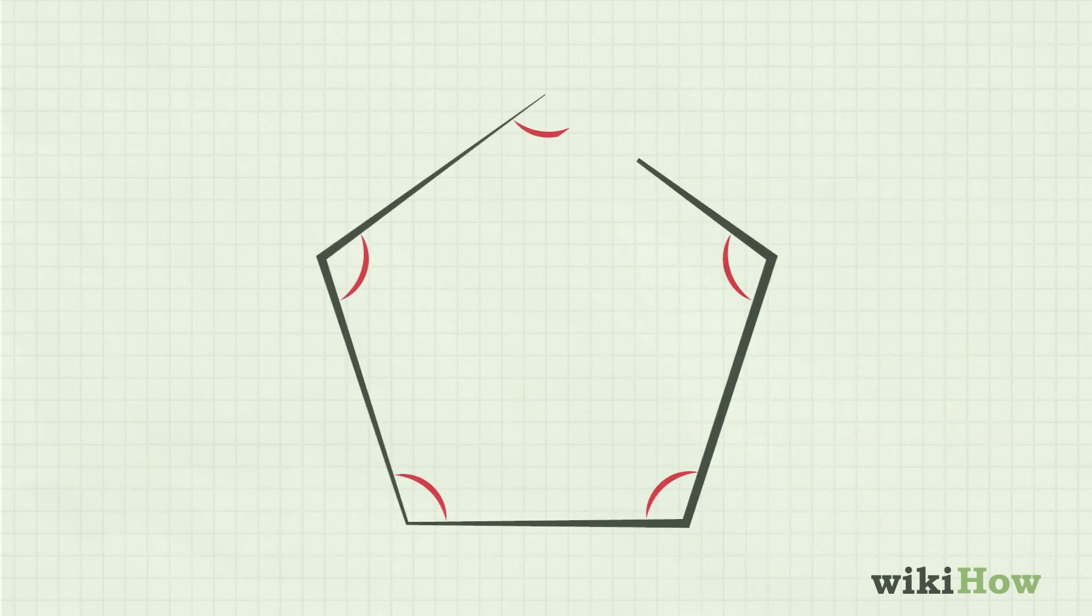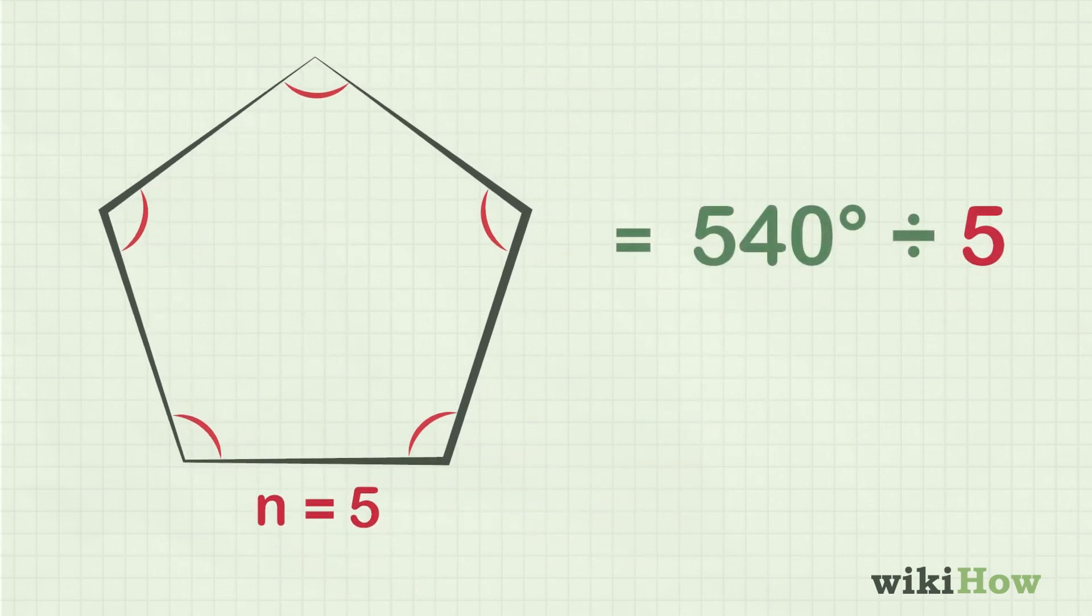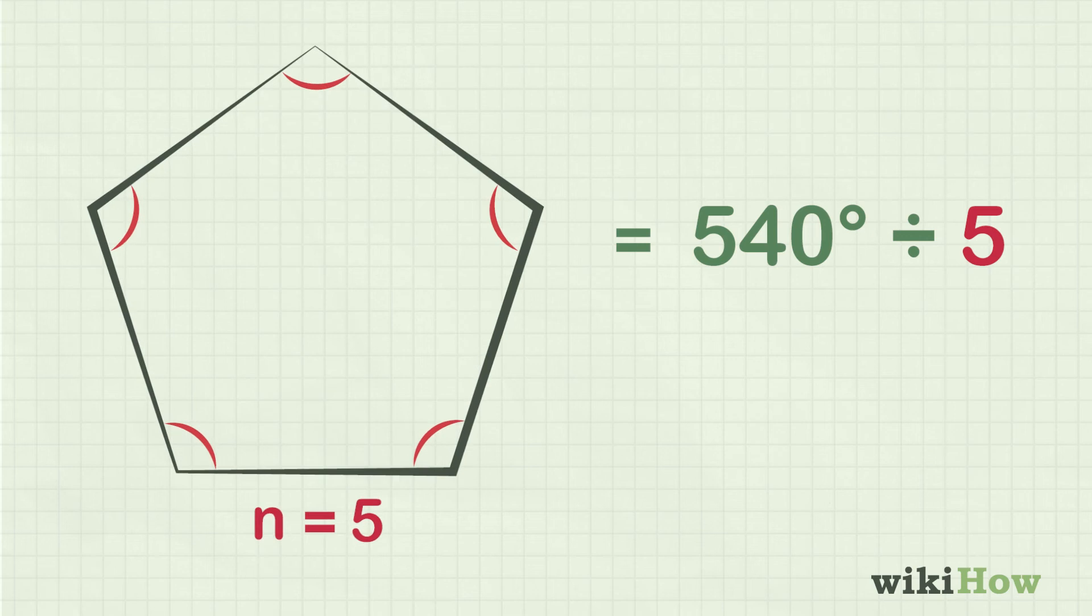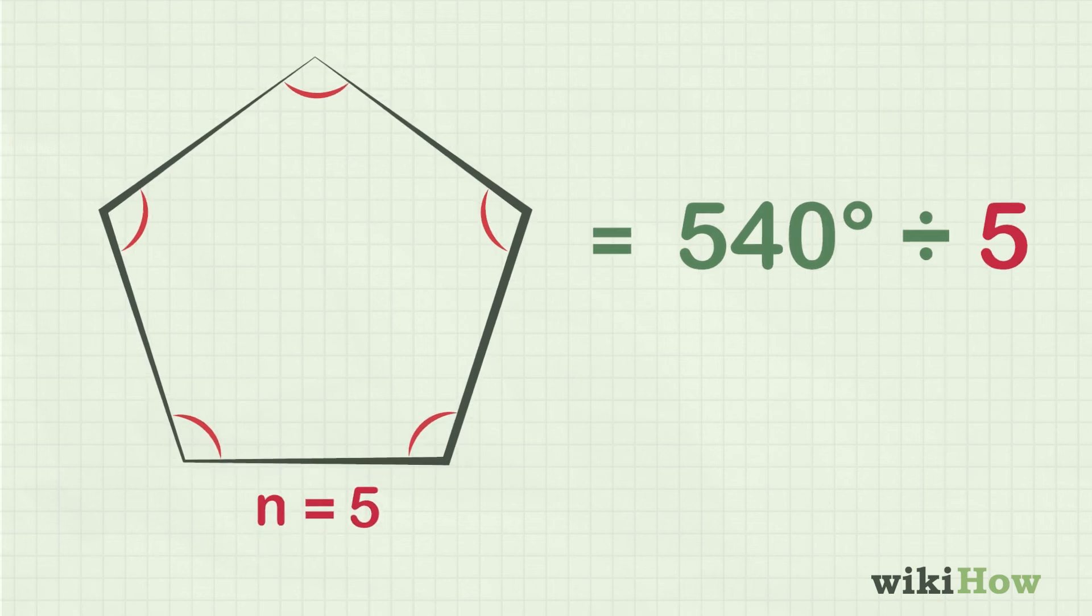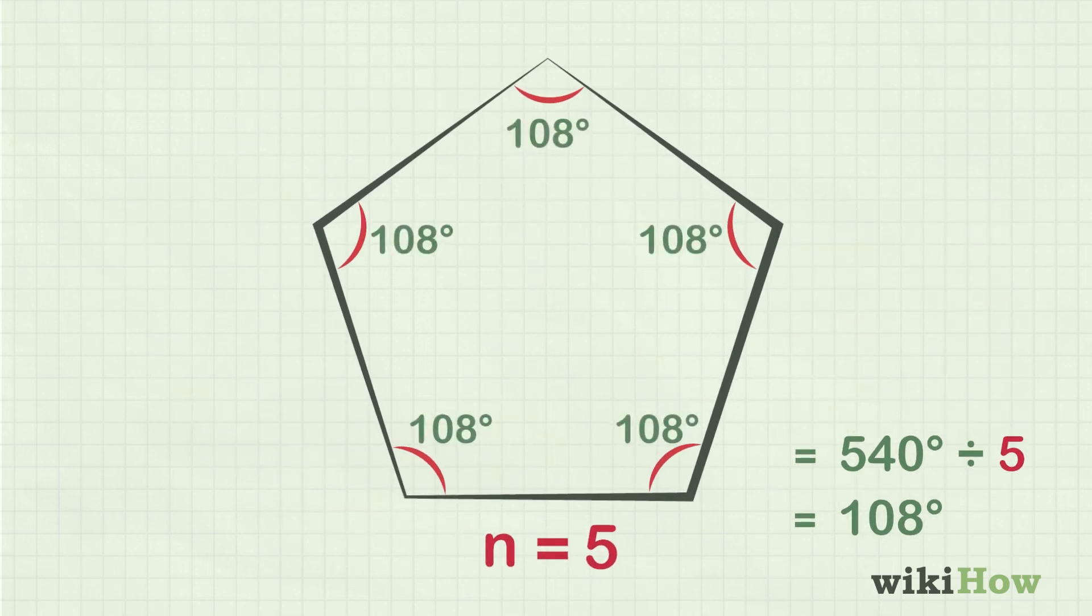If the polygon is regular, that is, if all the sides are the same length, then all you have to do is divide the total number of degrees of all the interior angles by the number of sides in the polygon. For instance, to calculate the angles in a regular pentagon, divide 540 degrees by 5 to get 108. Each angle in the pentagon has 108 degrees.